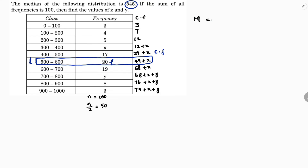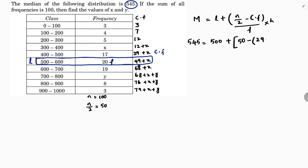The median formula is l plus (n by 2 minus cf) by f times h. Median is 545, lower boundary l is 500, n by 2 is 50, cf is 29 plus x, f is 20, and class size h is 100.